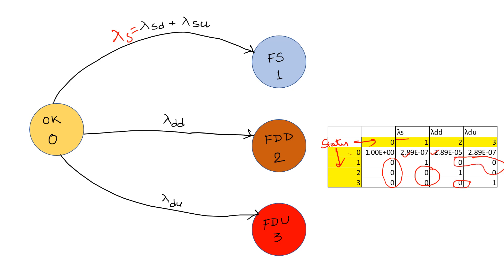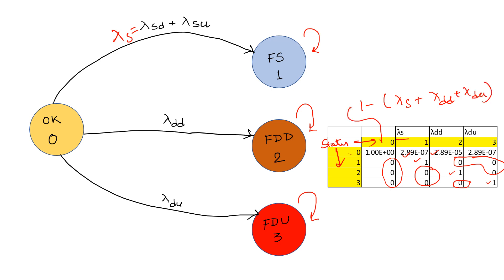Since states 1, 2, and 3 are absorbing, once you enter one of them you remain there permanently. The probability of state 1 to state 1 is always 1, state 2 to state 2 is always 1, and state 3 to state 3 is always 1. The probability of remaining in state zero is 1 minus (lambda_S + lambda_DD + lambda_DU). This value is reflected in the transition matrix.